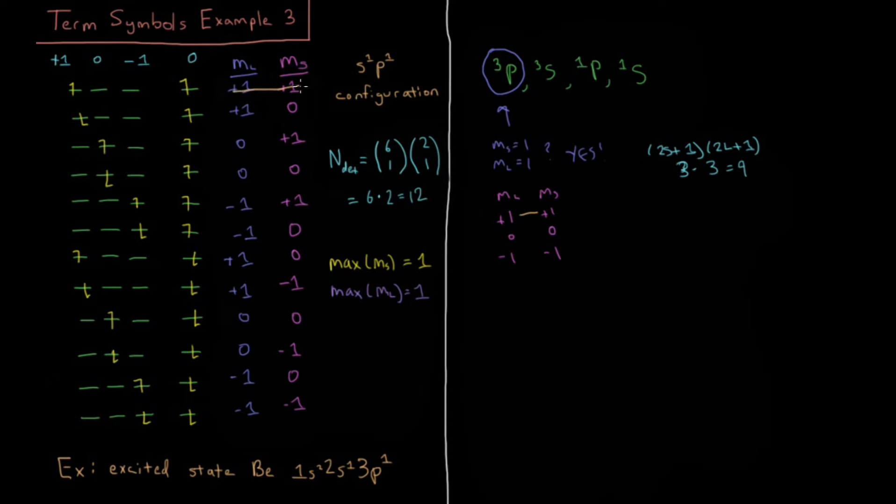As we go down this, plus 1 plus 1, cross off that, plus 1, 0, plus 1, minus 1, there it is, 0 plus 1, 0, 0, 0, minus 1, minus 1, plus 1, minus 1, 0, and minus 1, minus 1. So that's our triplet P term symbol.